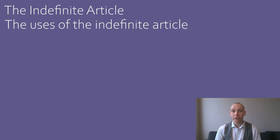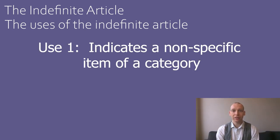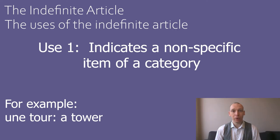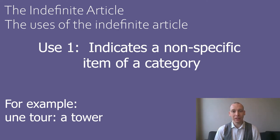Let's look at the uses of the indefinite article now. The first use of the indefinite article is that it indicates a non-specified item of a category. For example, 'une tour', or 'a tower'. This refers to any tower as opposed to a specific one. Recall that in our last episode, we used the definite article to refer to a specific tower.